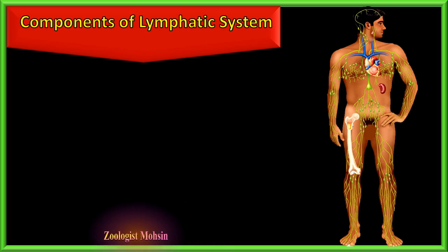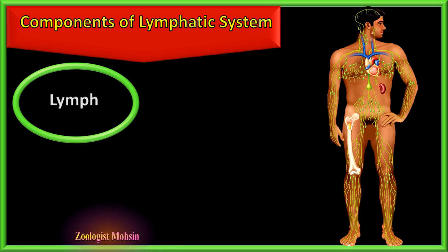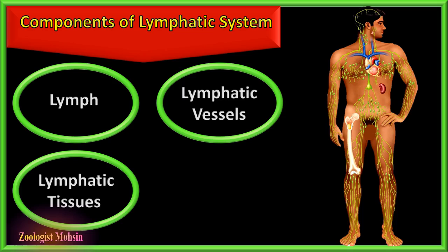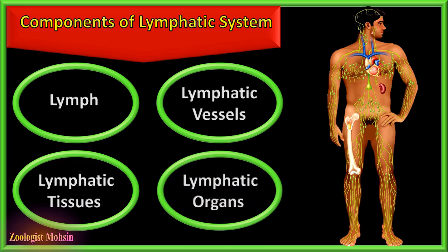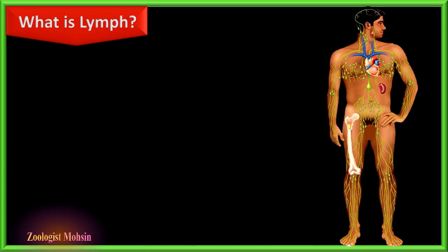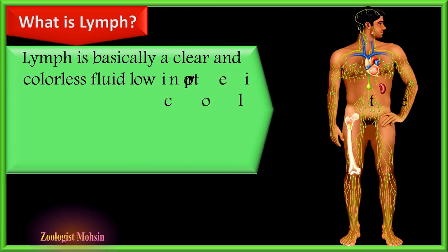The main components of the lymphatic system are: lymph — the collected fluid; lymphatic vessels, which transport lymph; lymphatic tissues, which are collections of lymphocytes and macrophages in different organs; and lymphatic organs, which are structures rich in lymphatic cells surrounded by connective tissues to protect the surroundings.